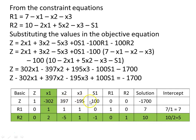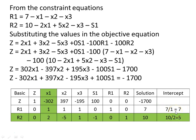Among the non-basic variables, we identify the most negative value in the z-row for a maximization problem — that is the entering variable. The value −302 is the most negative, so x1 is the entering variable. The intercepts are: 7 divided by 1 equals 7, and 10 divided by 2 equals 5. The minimum intercept is 5, so r2 is the leaving variable and the pivot number is 2.